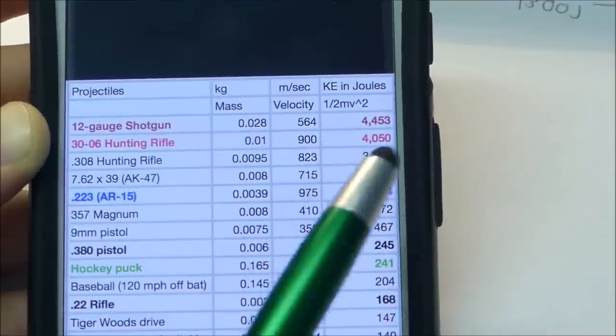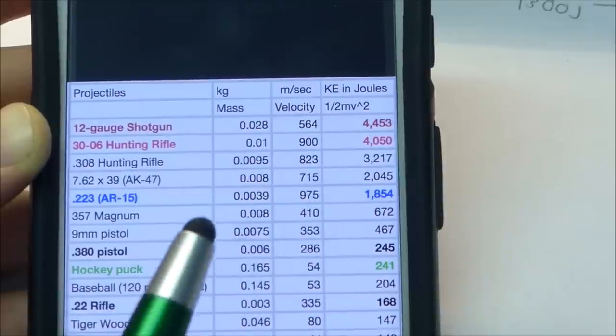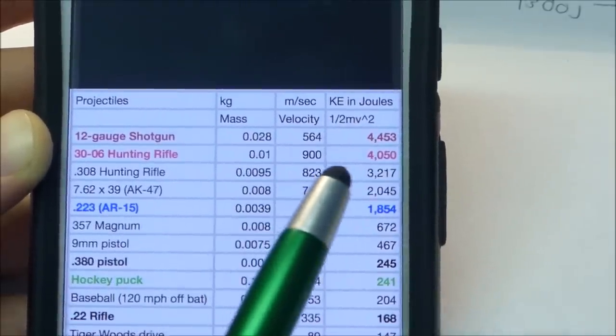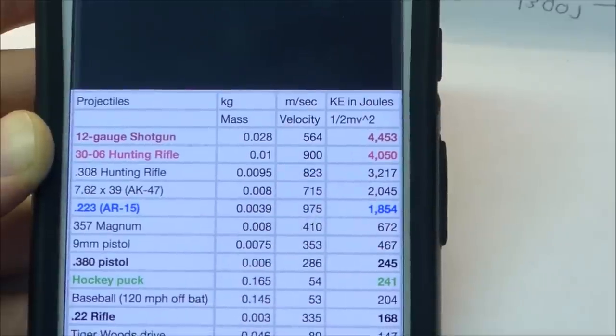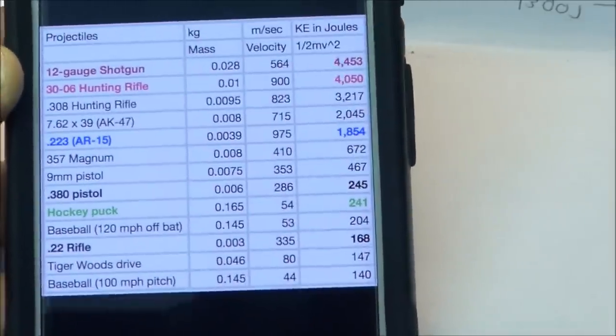As you can see, some of these ones get pretty big. An AK-47, my capacitor bank is about half as powerful as that. If you go into a 12 gauge shotgun, it's about four times as powerful as my capacitor bank. But still, it's pretty cool to compare that.